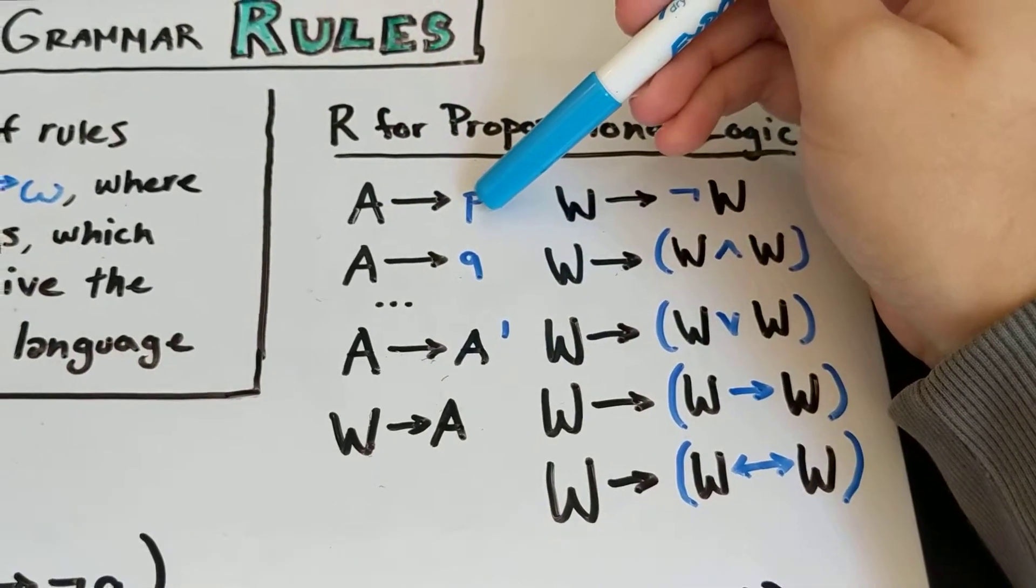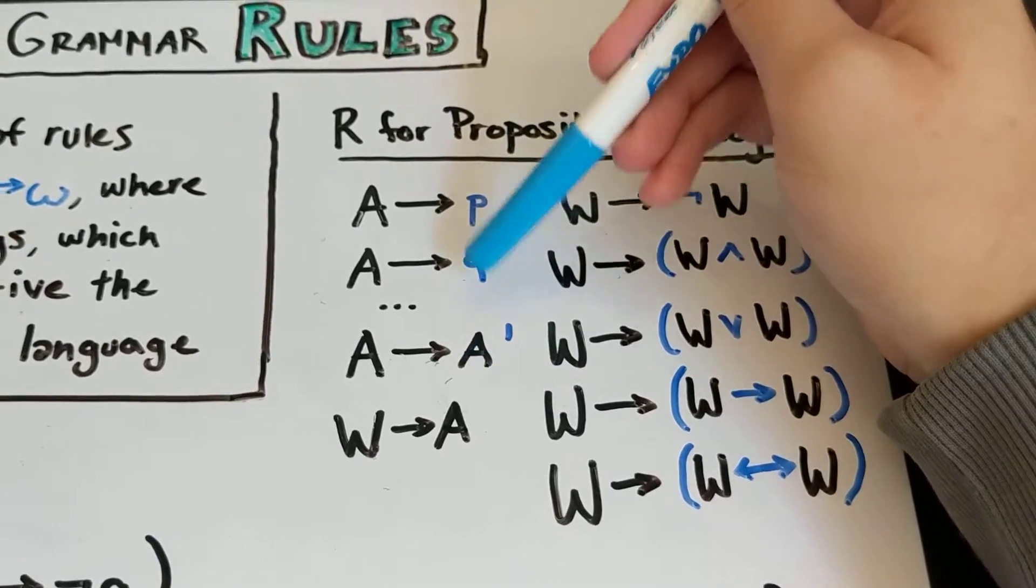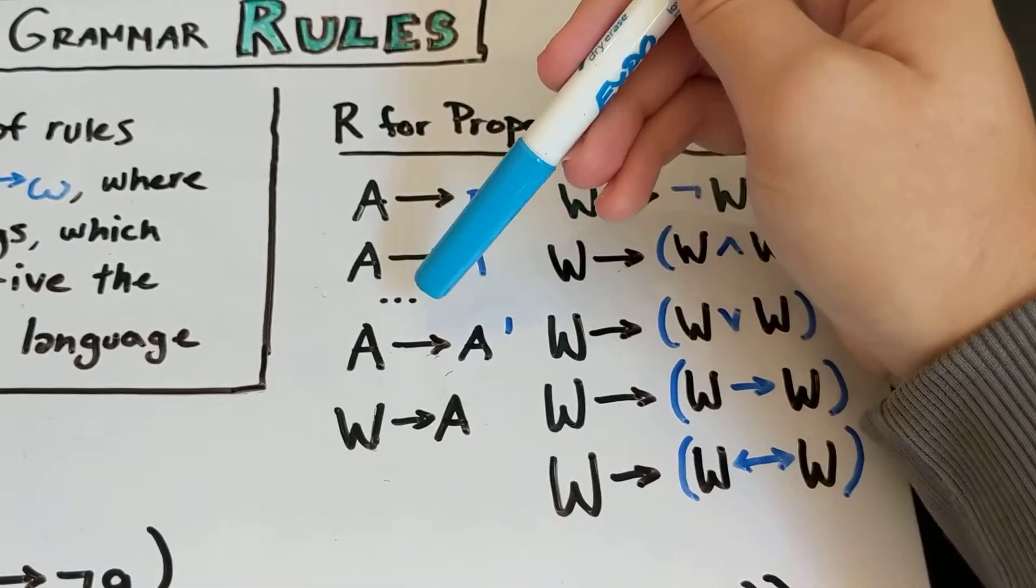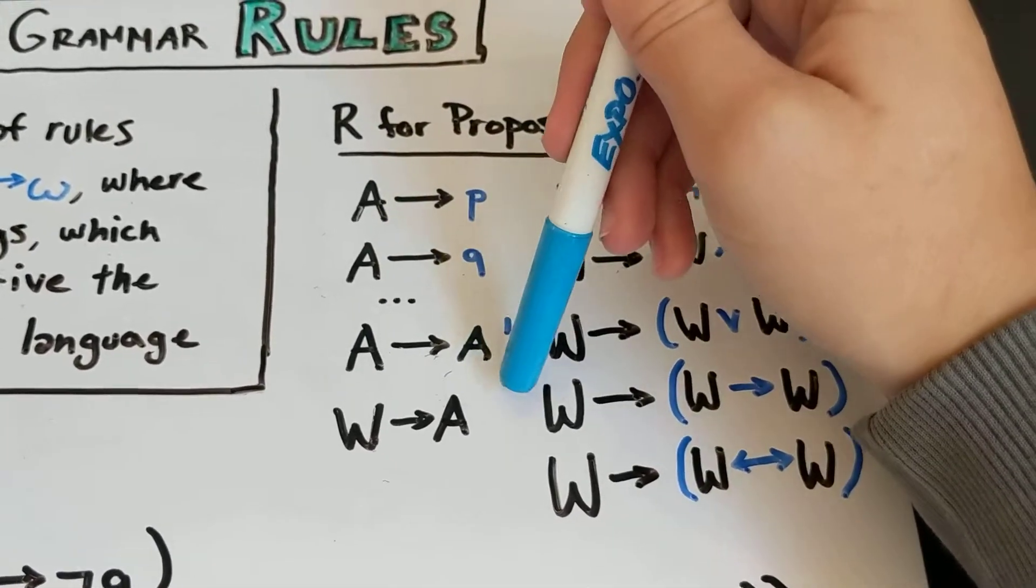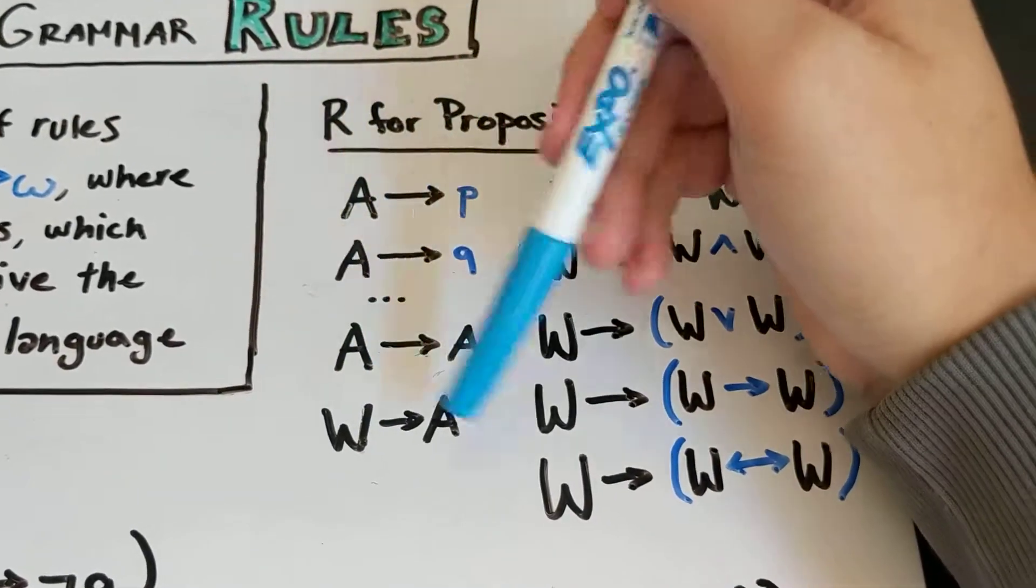So remember that P can be one, Q can be one, and any letter of the alphabet, lowercase letter of the alphabet can be one of these, and then you can also add any number of primes after those, and you can make these basic statements.